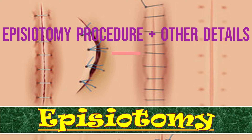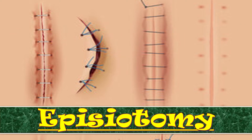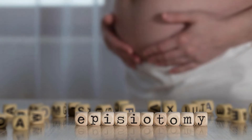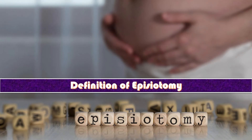The topic of our discussion today is episiotomy and we will talk about its definition, the types, immediate and late complications and the procedure of episiotomy. Episiotomy is an intentional surgical incision made in the perineum from the vaginal orifice laterally, with the aim of increasing soft tissue outlet dimensions to help with childbirth.